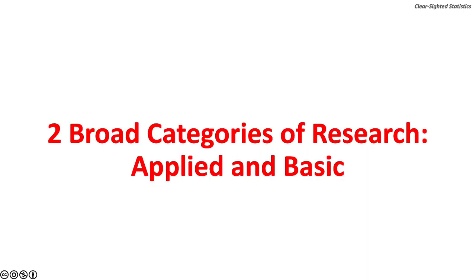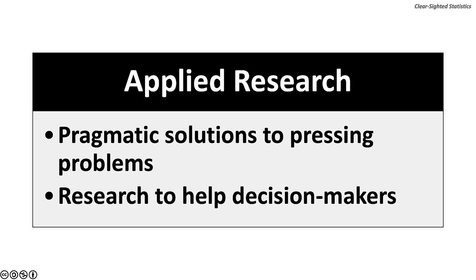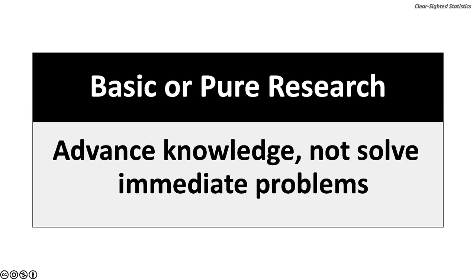There are two broad categories of research: applied research and basic research. Applied research seeks to find pragmatic solutions to pressing problems. The goal of applied research is to uncover information to help decision makers make decisions. The second kind is basic or pure research, whose goal is to advance knowledge, not solve immediate problems.